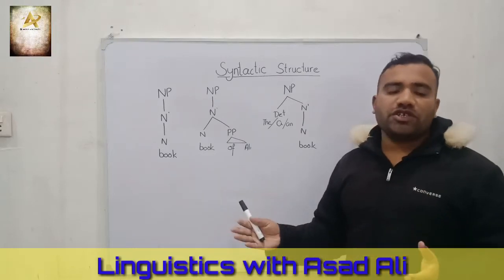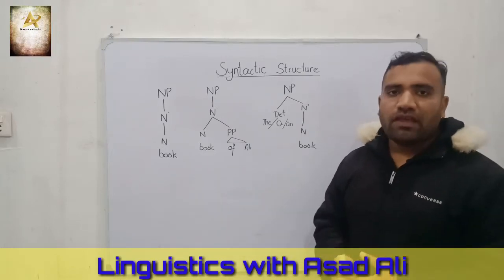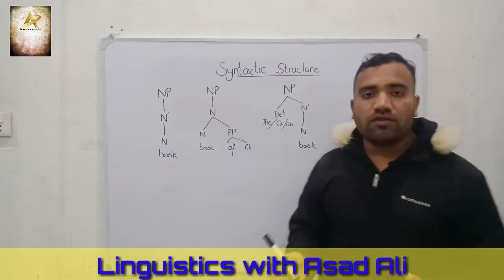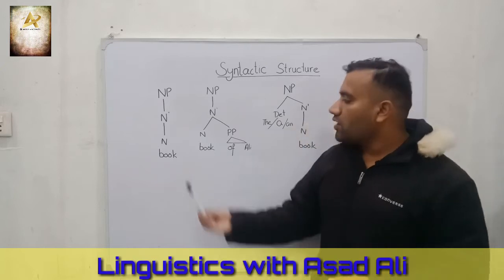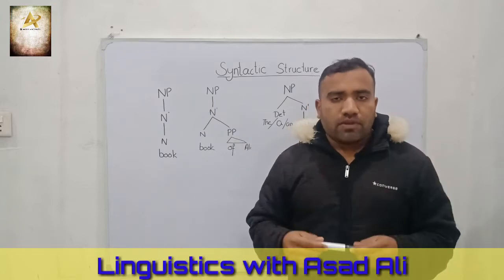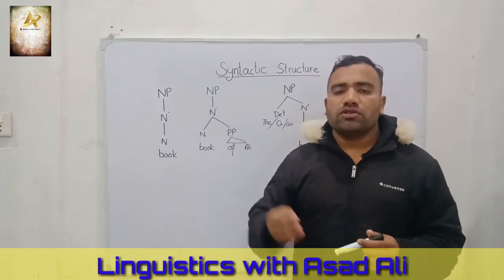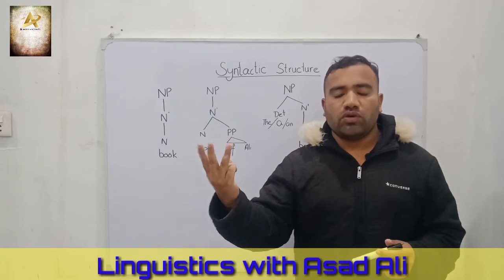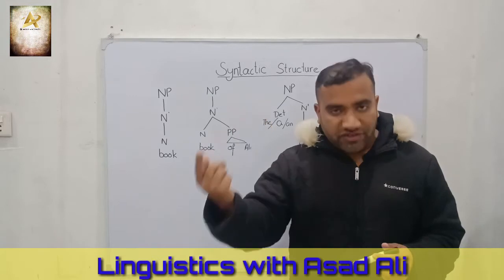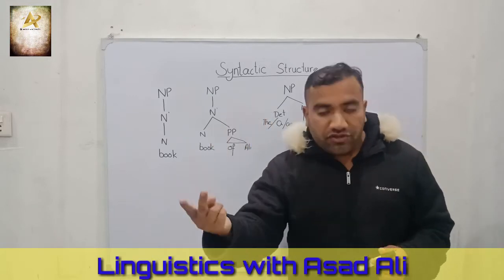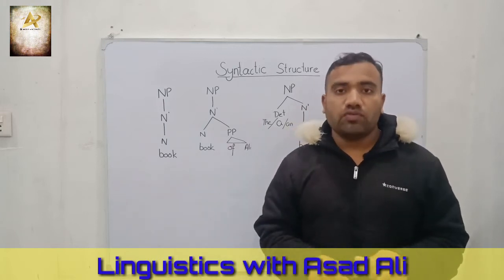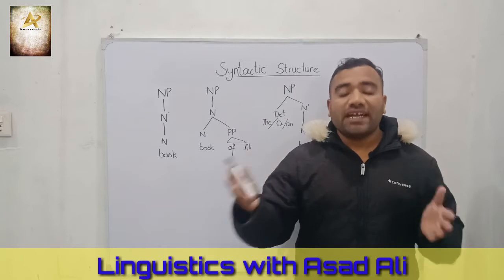Let's see the syntactic structure of a phrase. First, we see that the single item, the single word — for example, 'book' — can be any item that is known. We have three types of entities that are known: they are the personalities, the places, and the things. There are three types of knowns; we call them the entities.